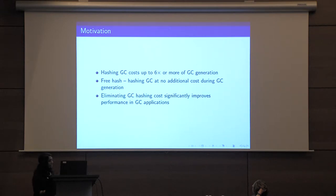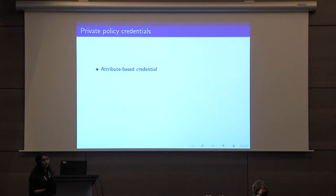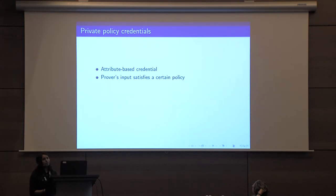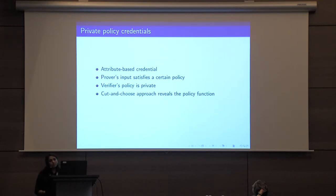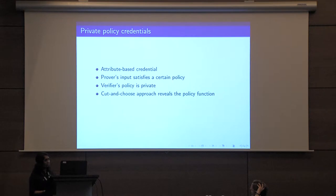Eliminating the cost of GC hashing significantly improves performance in many applications. One of our motivating applications is an attribute-based credential verification where we have a prover with an input who wishes to prove in zero knowledge that his input satisfies a certain policy. We are interested in the setting where the verifier's policy function is also private. Standard cut-and-choose approaches do not seem to work here since the check circuits reveal the evaluated policy function.